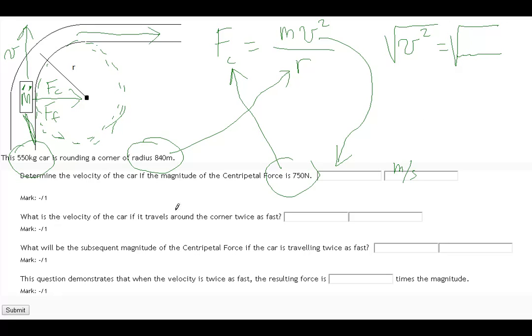Now, this question is attempting to ask you what happens if you go twice as fast. So if you go twice as fast, you just take this answer and you times it by 2, and you get twice as fast meters per second. Then redo the equation.